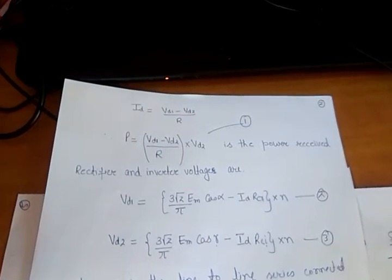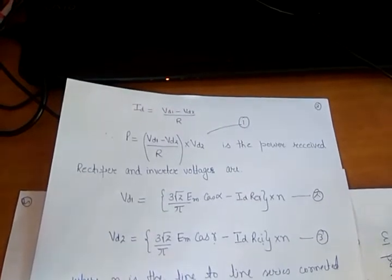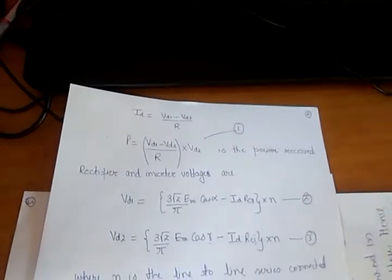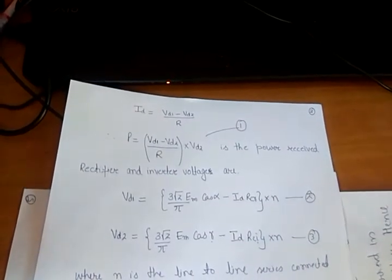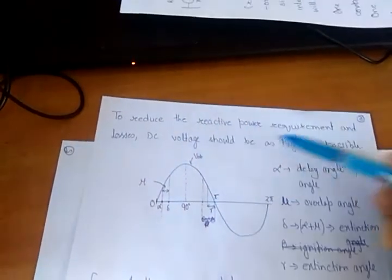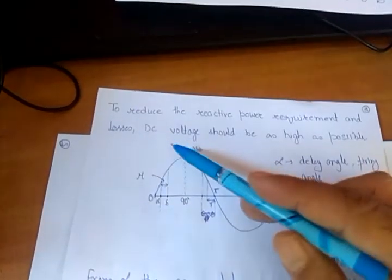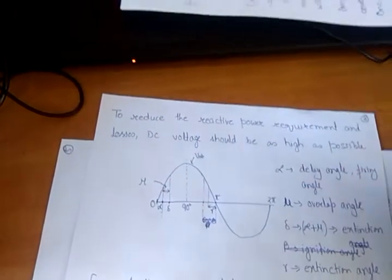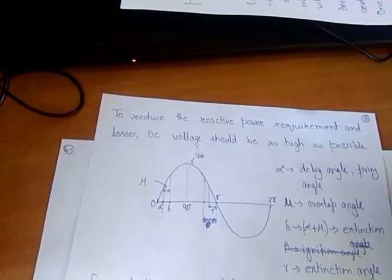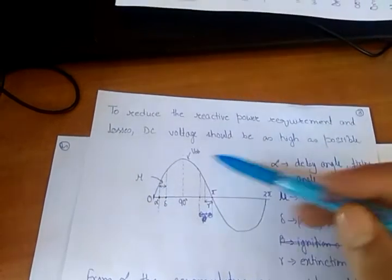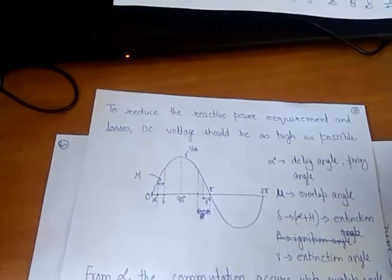In an HVDC system, huge reactive power is required at converter terminals, and there are losses due to harmonics and other things. The objective of the controller is that losses as well as reactive power requirement should be as low as possible. This can be achieved by keeping the DC voltage as high as possible — the smoother the DC voltage, the fewer harmonics, so high DC output voltage means low reactive power requirement and losses.